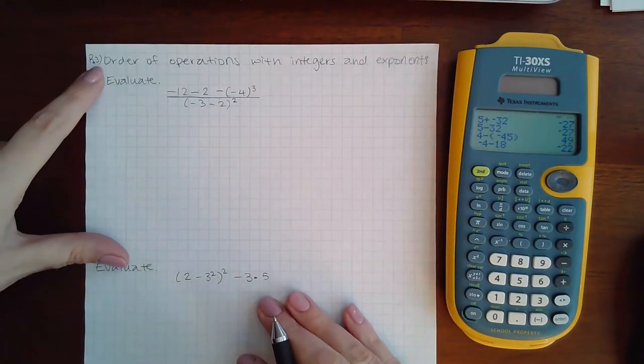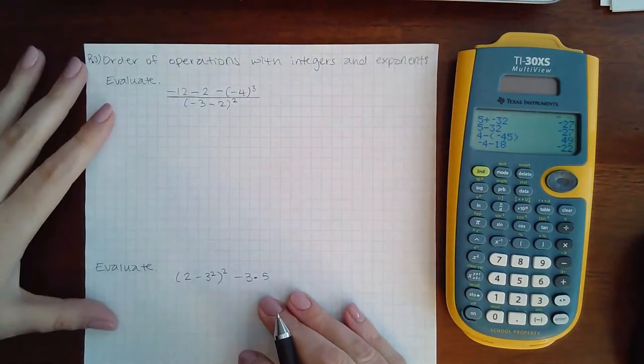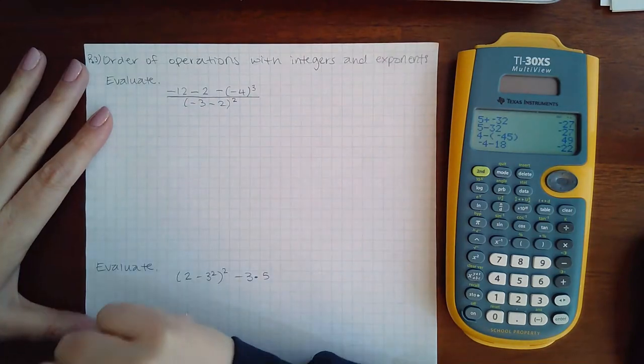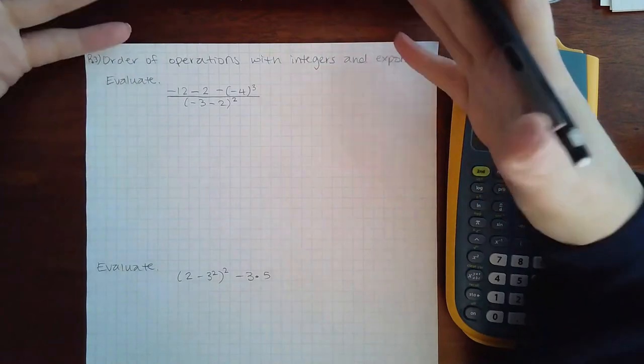Here we have our order of operations with fractions and exponents. I do have a grouping mechanism here, the fraction. Then within the numerator and within the denominator, I'm going to go through the order of operations.